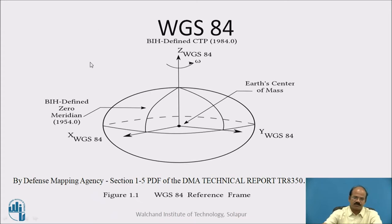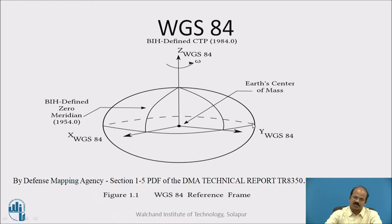Here you can see that the zero meridian is assumed at this position. All of us are familiar that the geographic meridian passes through Greenwich, with reference to which the longitudes of various points on earth are recorded. The equatorial plane is taken as the zero latitude plane. Above the equator towards the north, points have positive coordinates; on the lower side, negative coordinates. So it will be plus on the northing side and minus on the south side. Similarly, with reference to the meridian, towards east and west we will have certain coordinates.